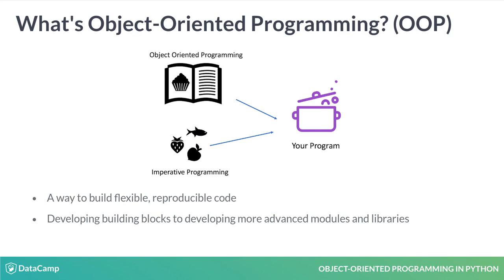Not everything we do in Python has to be object-oriented. But sometimes we don't know what we'll need ahead of time. We'll plan and write functions and variables as we go, as you can see in the picture on the lower left. We refer to this style of writing out functions and variables as imperative programming. Either way, we make something delicious — the program — on the right-hand side.